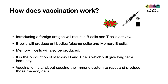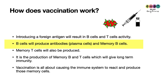How does vaccination work? A vaccine contains a weakened version of a pathogen, or it could be just the antigen. Once you introduce that foreign antigen, you stimulate specific B cells and T cells — specific to that antigen — to become active. The B cells will eventually divide and produce plasma cells, which produce the antibodies specific to that antigen.